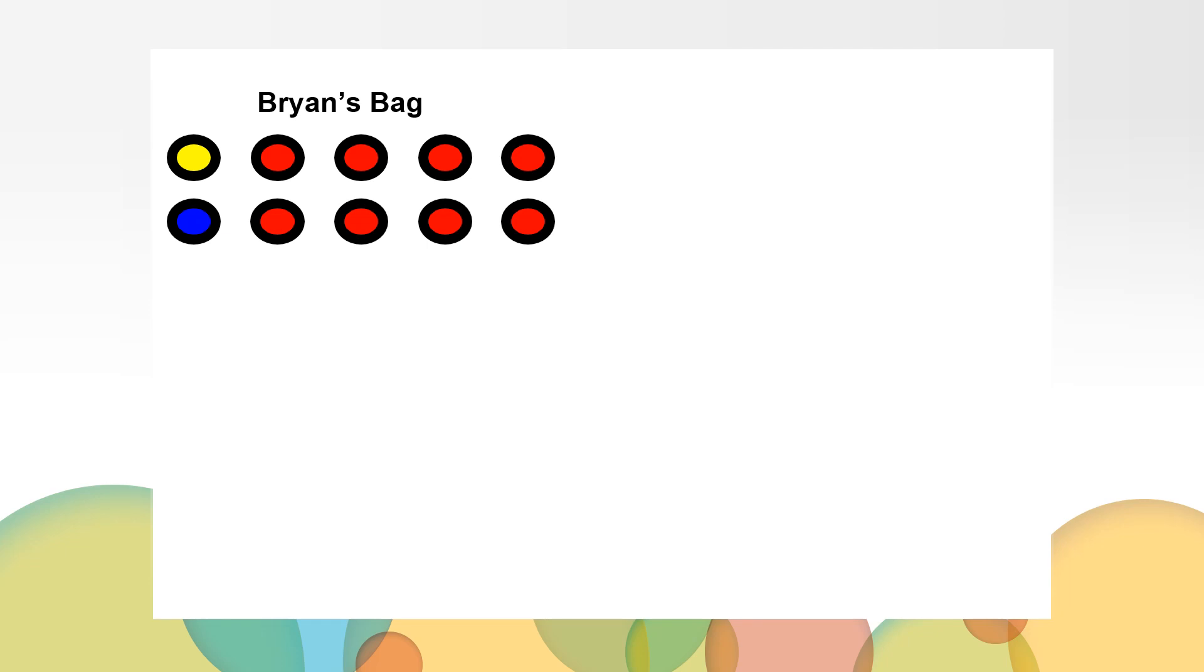Let's look at some of the drawings that some other third graders came up with. Brian drew his 10 marbles and colored one yellow and one blue. He colored the rest of his marbles red. Brian has the same number of yellow marbles as blue marbles, so it is equally likely that you would pick a yellow or a blue marble from his bag.